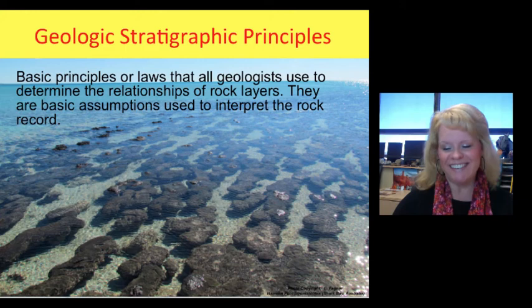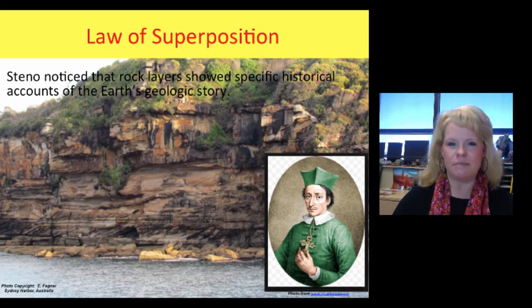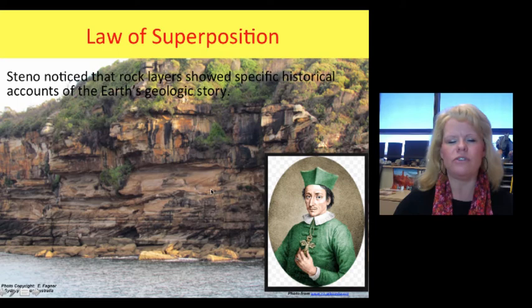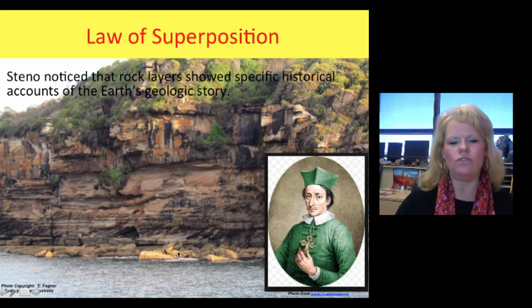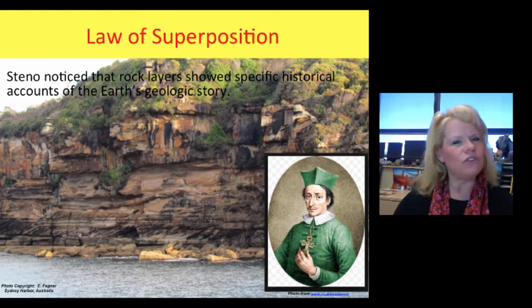Let's start with the law of superposition. This is Nicholas Steno. Interesting guy — when he was alive hundreds of years ago, it was not popular to be a scientist. He was a priest living in Italy who studied biology and geology. He came to the conclusion that rock layers, like you see here in Sydney Harbor Bay, Australia, must have taken a very long time to form, and the stuff at the bottom should be older geologically than the stuff at the top. He noticed that rock layers showed specific historical patterns of Earth's history, and he called that the law of superposition.